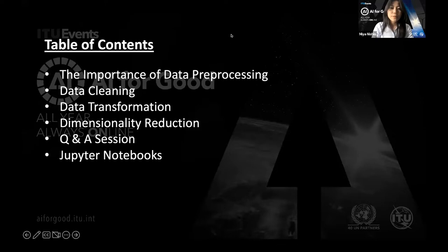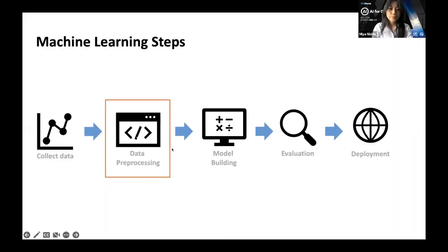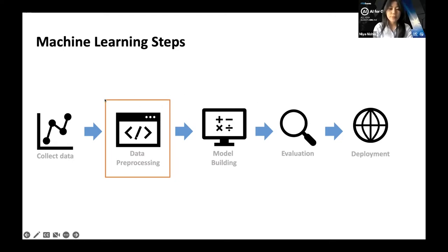Here's what we'll be going over: first, the importance of data preprocessing, then some data preprocessing techniques, as well as a Q&A session and a Jupyter Notebook practice session. Let's take a look at our machine learning steps. We have first collecting our data, then preprocessing it — cleaning up our data before inputting it into our model — evaluating it, and then deploying it. Today we're taking the second step in the machine learning pipeline before we put our data into the model building section.